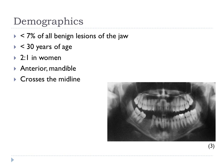Demographically, Central Giant Cell Granuloma is an uncommon lesion, accounting for less than 7% of all benign lesions of the jaw. 60% of cases are diagnosed in individuals under the age of 30. They are found in a ratio of 2 to 1 in women to men. These lesions appear in the jaw more than anywhere else in the body, but they can also be found in small bones of the hands and feet.